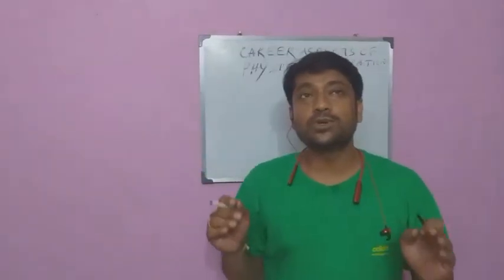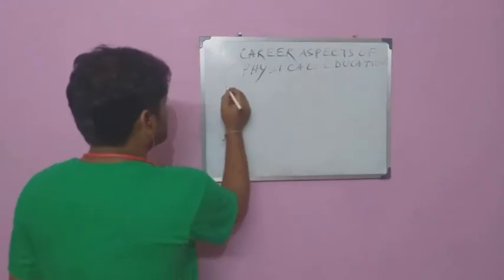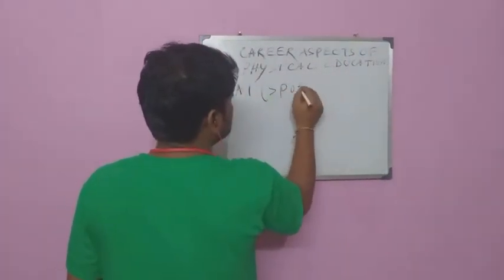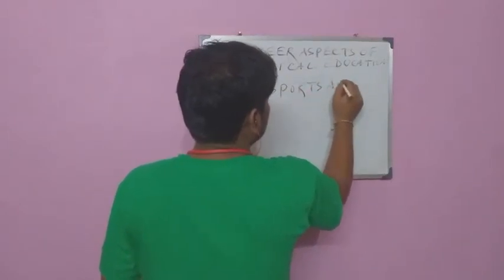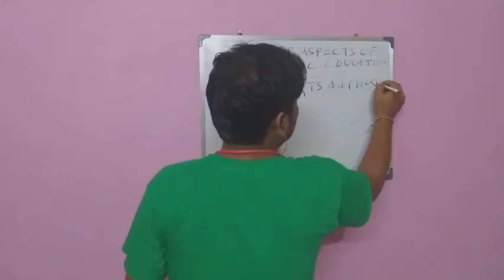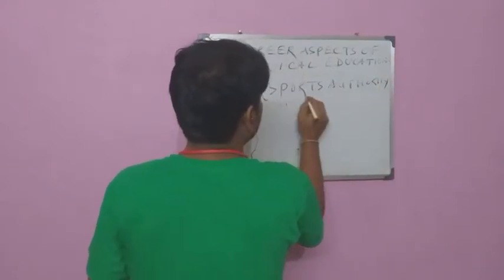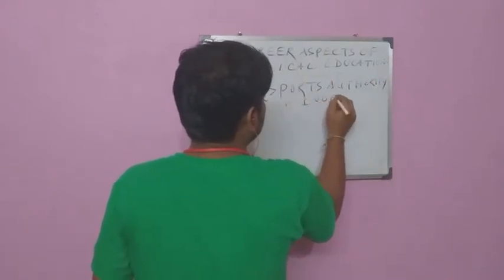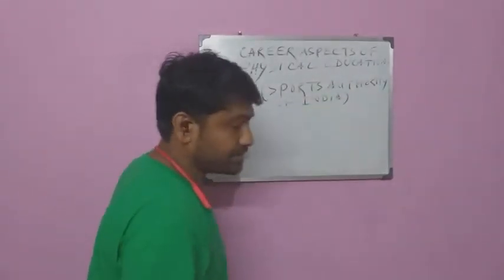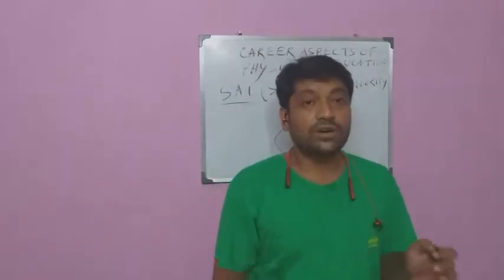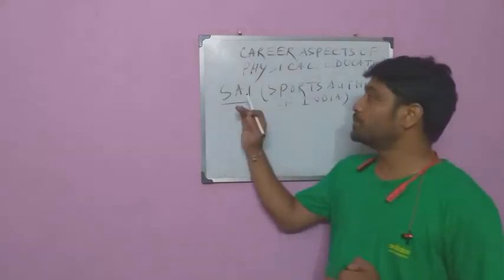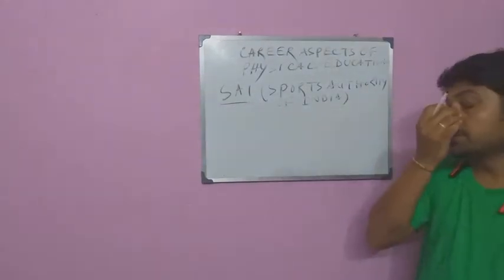So today's discussion is about the Sports Authority of India, also known as SAI. SAI stands for Sports Authority of India. Now I'll discuss what are the objectives and functions of the Sports Authority of India.